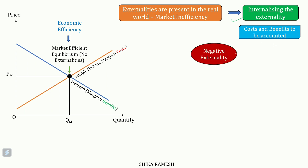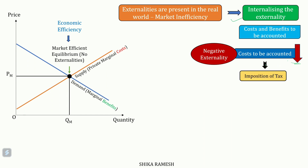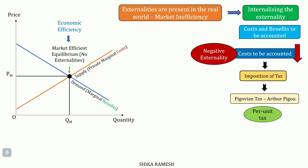Now, if it is a negative externality, the cost incurred by the society from the damages needs to be reduced. This is done by imposing a tax on the price of the product by the government that is causing the negative externality. Such a tax is termed the Pigouvian tax, named after Arthur Pigou — it is a per unit tax equal to the external damage caused by an activity.